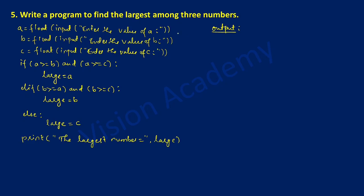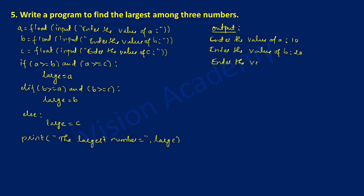Once we execute this program it will ask the user to enter the value of a — it will print 'enter the value of a'. For example I am going to write 10. Next it will ask the user to enter the value of b — I am going to enter 20. Next it will ask the user to enter the value of c — I am going to enter 30.